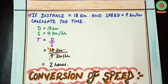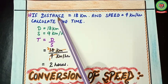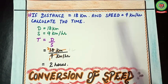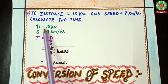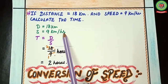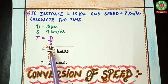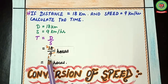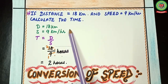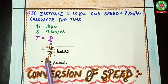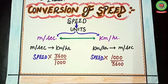Third example: if distance equals 18 kilometers and speed equals 9 kilometer per hour, calculate the time. Given: distance = 18 km, speed = 9 km/h. Formula: time = distance divided by speed = 18 divided by 9. Distance is in kilometers and speed is in km/h, so time will be in hours. 9 into 18: 9 twos are 18, so time equals 2 hours.